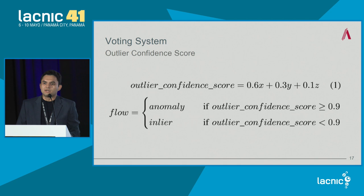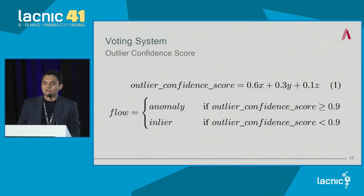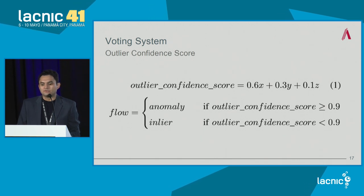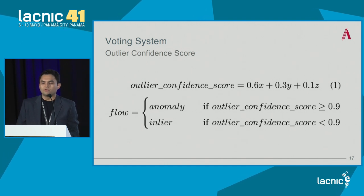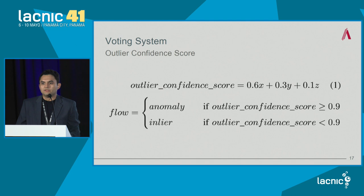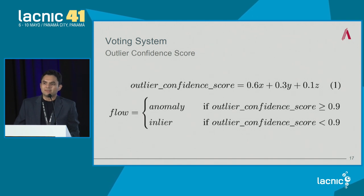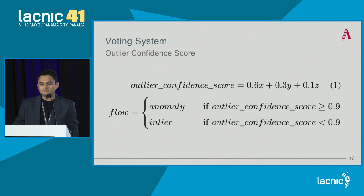Once we have the three models, we combine their predictions using an ensemble scoring system. The outlier confidence score equals 0.6X + 0.3Y + 0.1Z, where X is the autoencoder output (1 for anomaly, 0 for normal), Y is the Isolation Forest, and Z is the One-Class SVM. For example, if both the autoencoder and the Isolation Forest detect an anomaly, the combined score is 0.9, which according to our threshold means an anomaly. This way we rely on three algorithms for higher prediction confidence.